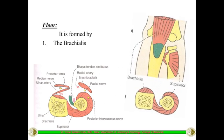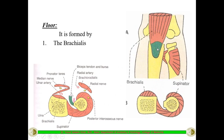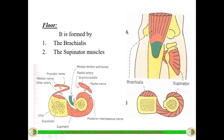The brachialis inserts into the ulnar tuberosity and forms part of the floor. The other muscle forming the floor is the supinator, a muscle of the forearm in the extensor compartment. So the two structures forming the floor of the cubital fossa are the brachialis and the supinator.